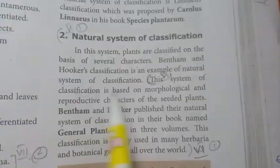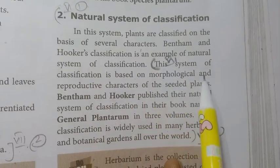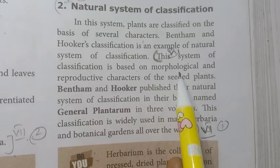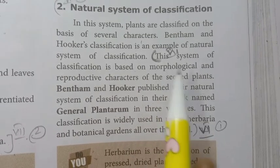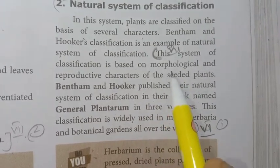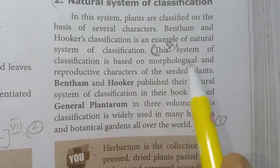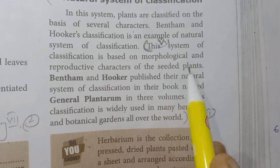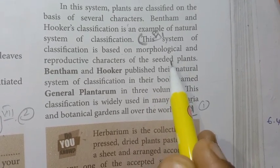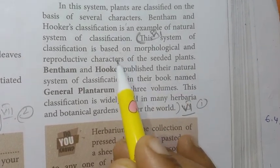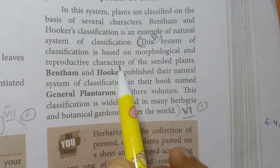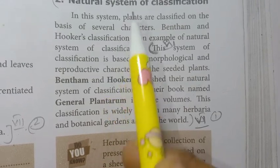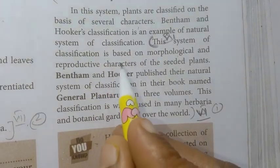This classification is widely used in many herbaria and botanical gardens all over the world. Natural System of Classification is based on morphological and reproductive characters of the seeded plants.